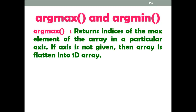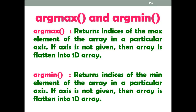argmax returns the indices of the max element of the array in a particular axis. If axis is not given, then the array is flattened into a 1D array. Similarly, argmin returns the indices of the min element of the array in a particular axis. If axis is not given, then the array is also flattened into a 1D array.